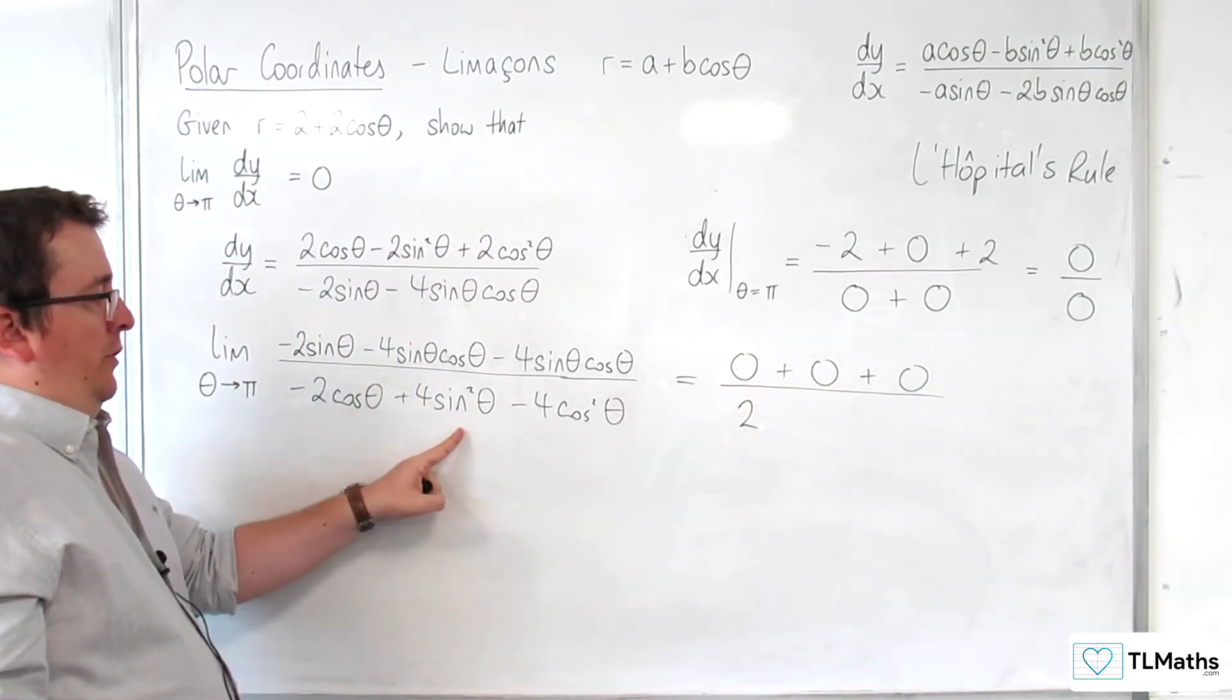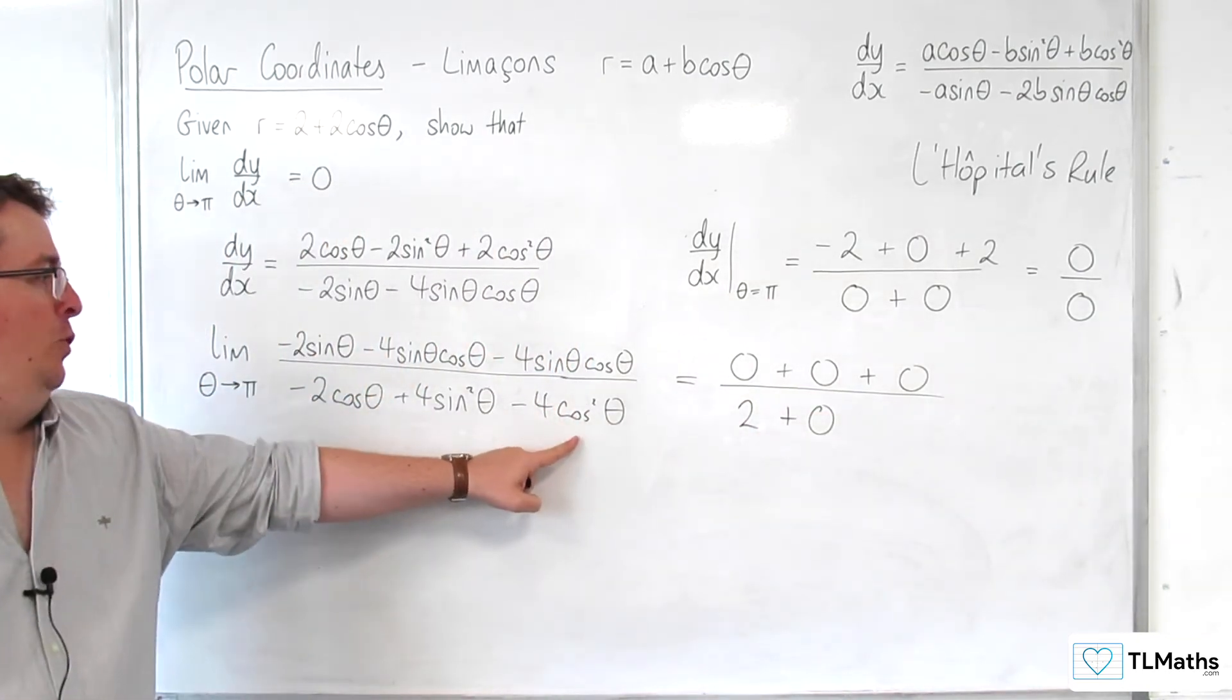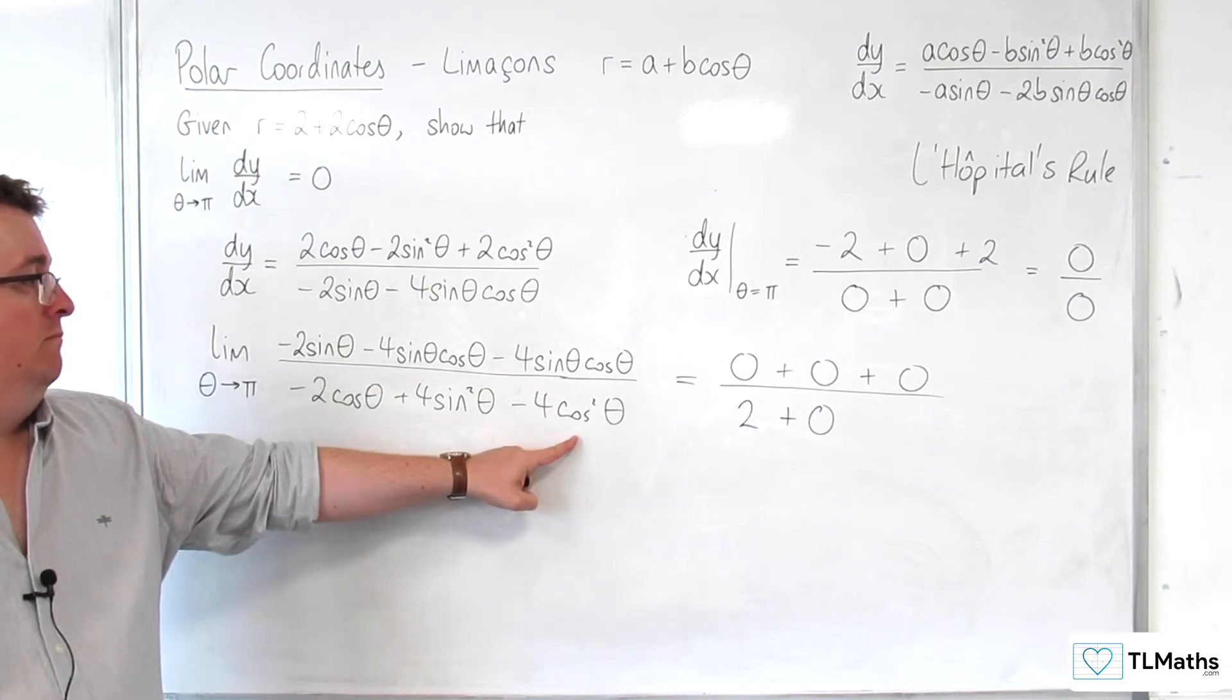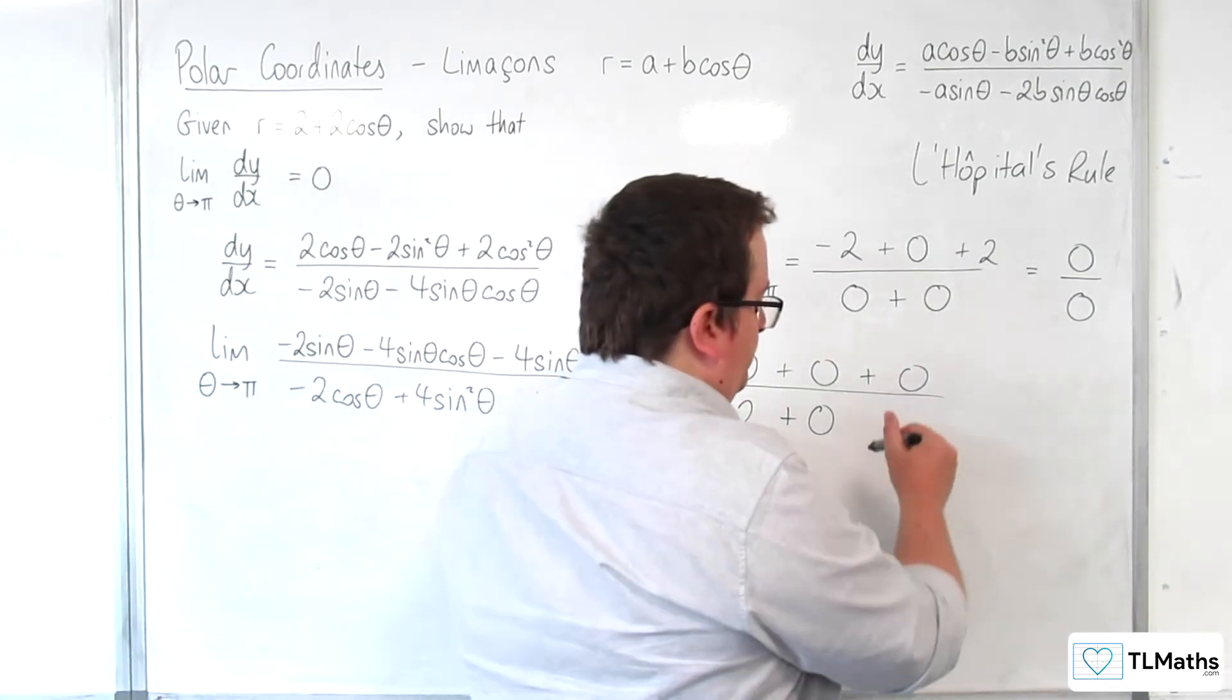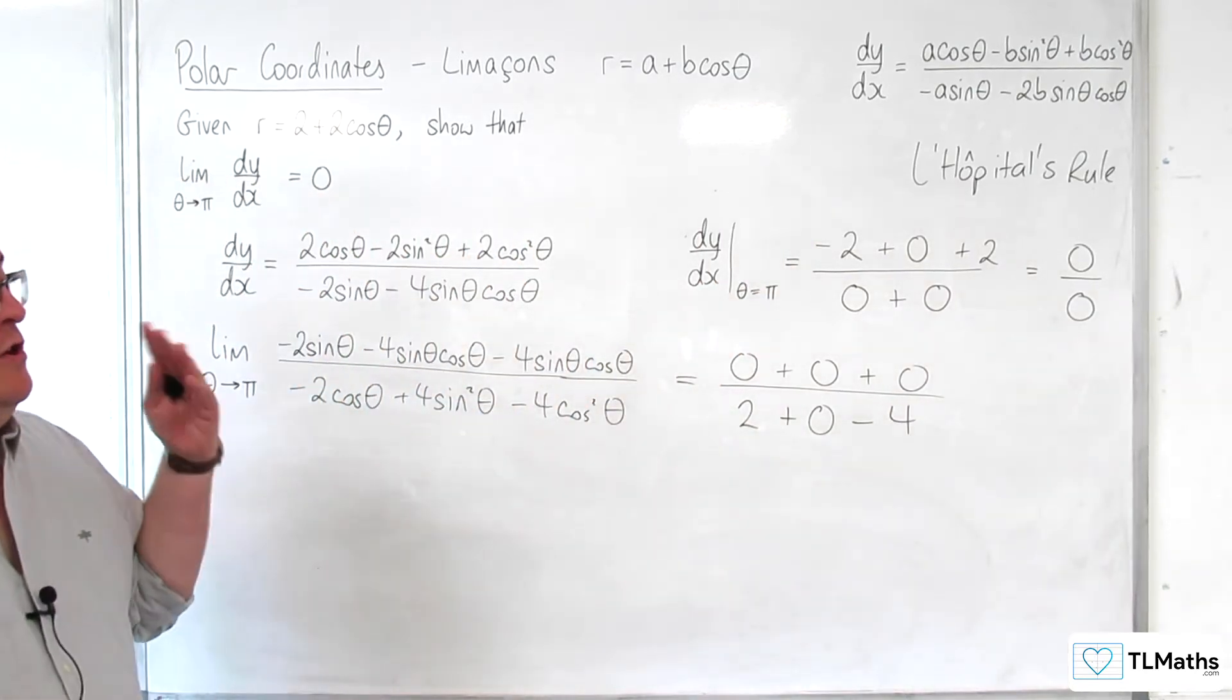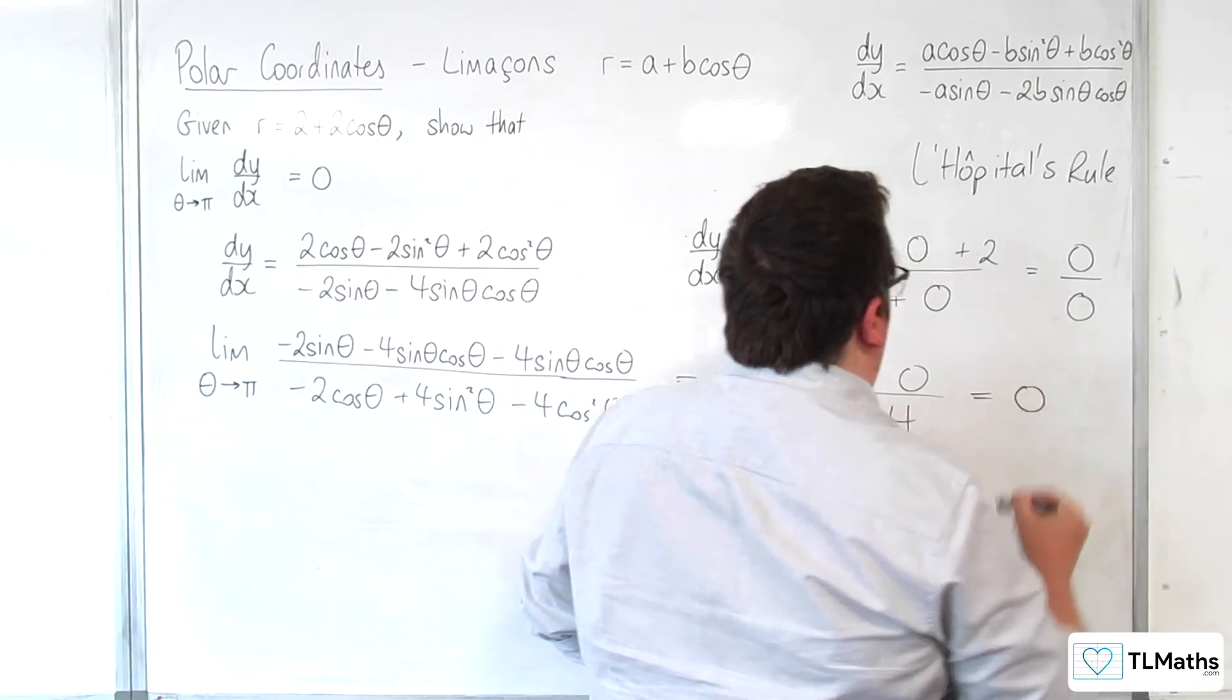We get 4 lots of 0, and we get minus 4 lots of 1, so that's minus 4. And so we've got a non-zero term in the denominator now, and so this is equal to 0.